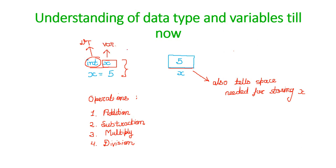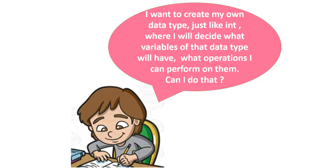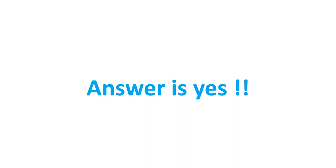Once we understand that, Sheldon now has a problem. He's saying, I want to create my own data type, just like int, where I will decide what variables of that data type will have, what operations I can perform on them. Can I do that? Yes, you can do it. You can do it with the help of classes.